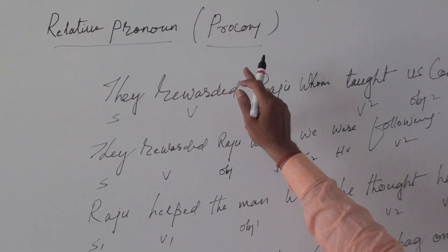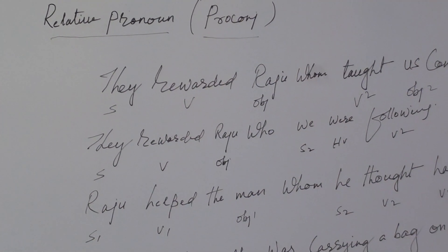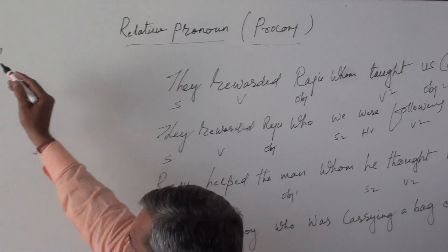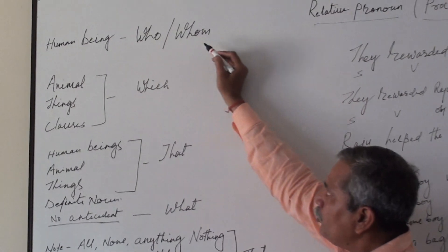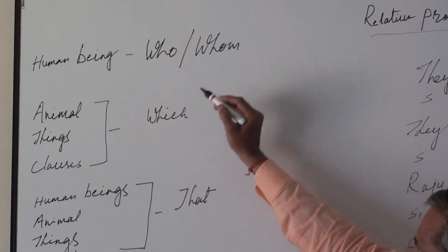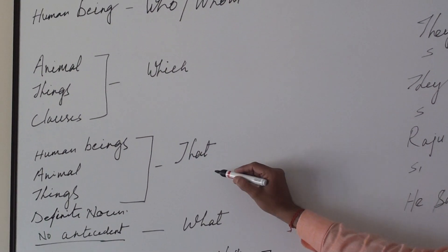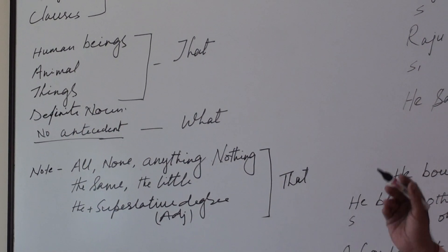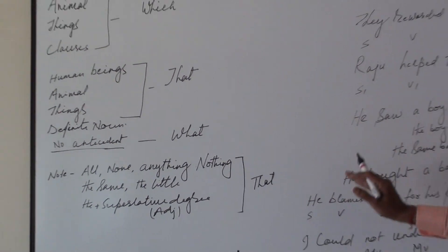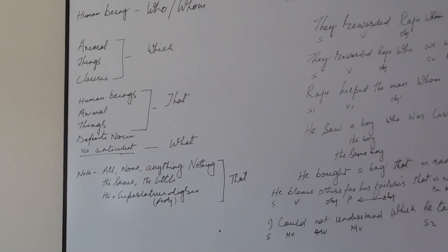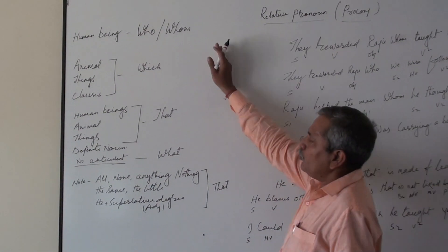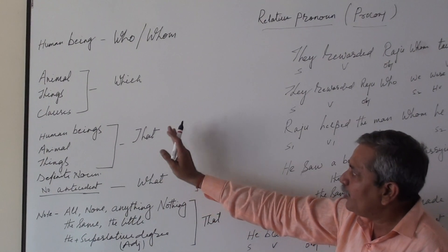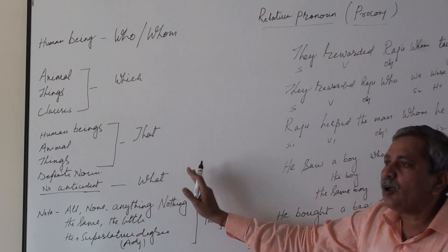That is why I call it Prokanj. The most common ones that we use are: who, whom, which, that, and what. The question arises: where to use who, whom, where to use which, where to use that, where to use what.